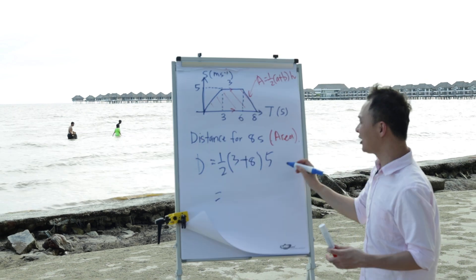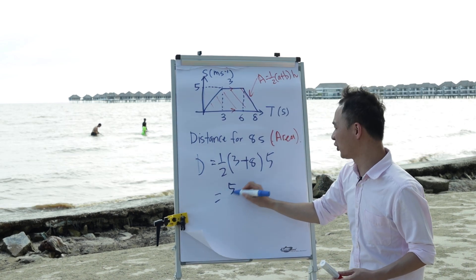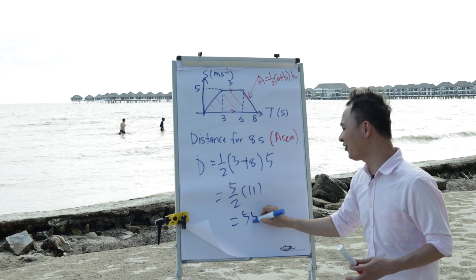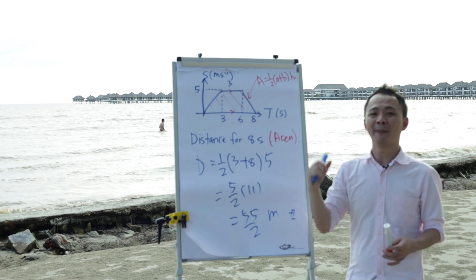So just need to solve this one then I can easily get the area which is 5 over 2 multiplied by 11 which is 55 over 2. So this is the total distance traveled by the particle.